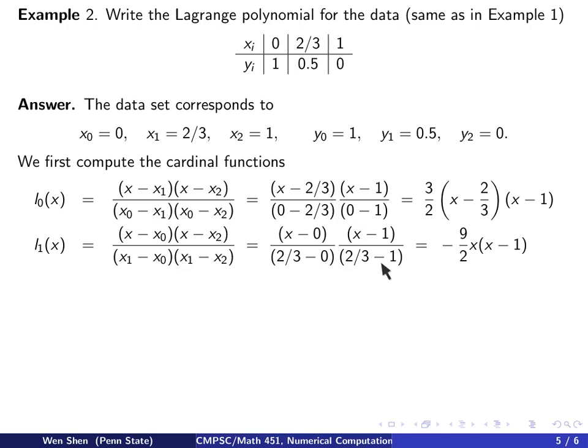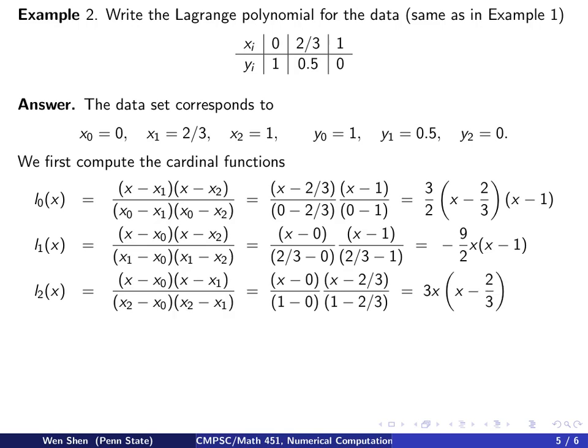And finally, the last cardinal function associated with x2. And you see on the numerator we skip the term x minus x2. So I have x minus x0 times x minus x1. And the denominator is the same as the numerator after switching the x into x2, which the index 2 is the index for your cardinal function. So again, plug in the numbers and work out the denominator, and you get 3x times x minus 2 thirds.